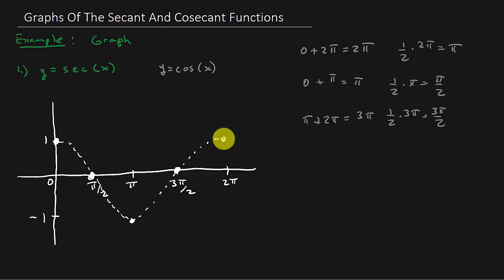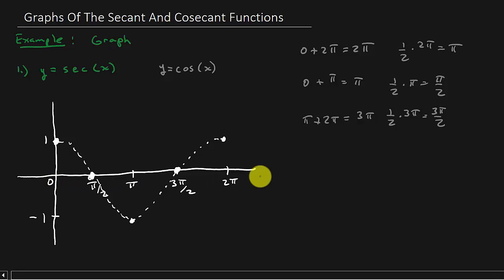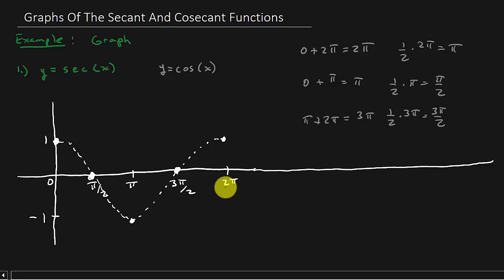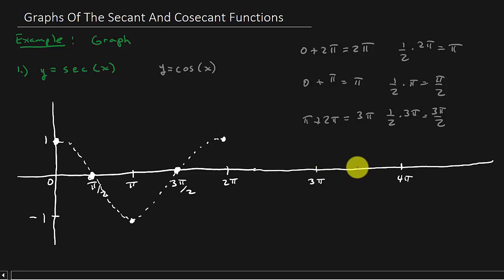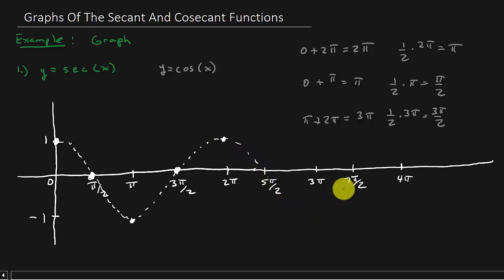If you wanted to graph this over two periods, you would just continue the line out. One period is 0 to 2π. You'd go over another 2π to 4π and split that up into four equal intervals as well — that would give you 5π/2 and 7π/2 — and it would just continue on.